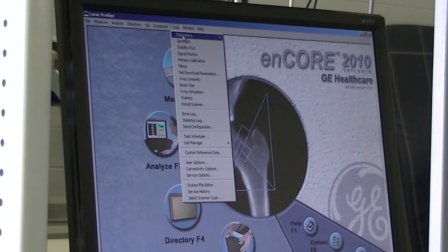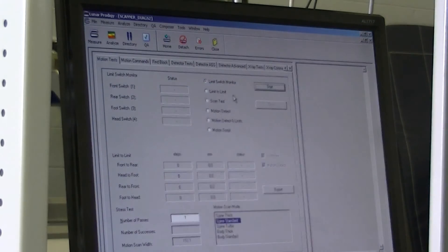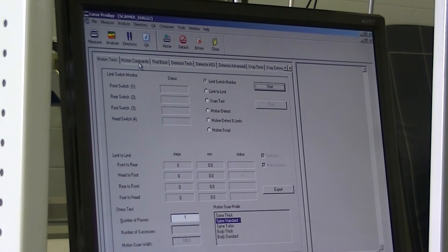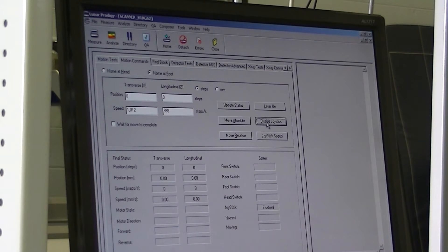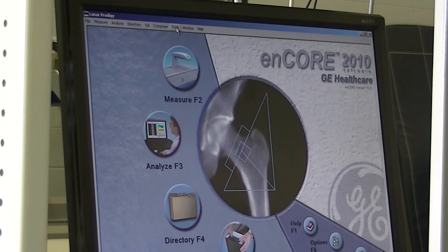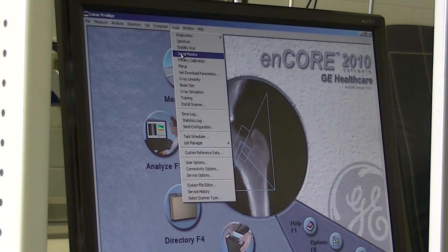So we go to Tools, Diagnostics, Scanner Motion, Motion Commands, Enable Joystick. When we enable the joystick, we're going to move the arm to the middle of the table. After the arm and tube are in the middle of the table, click Close, Collimator, Tools, scroll down to Signal Monitor.